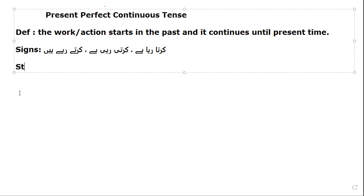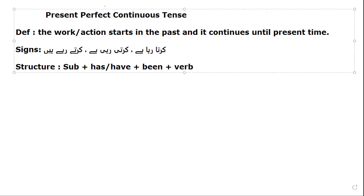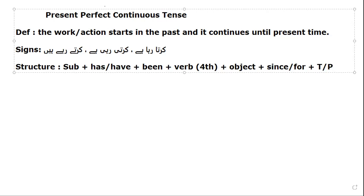Now let's come to the structure, and then I'll come to the sentences. The structure is: you use Subject first, then you use 'has' or 'have,' then you use the verb in the fourth form, then you use the object, and then you use 'since' or 'for' — it depends on the time — and then your time comes.